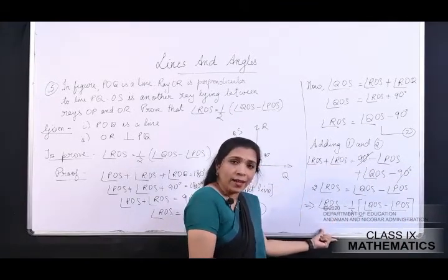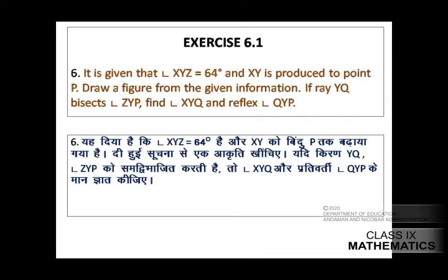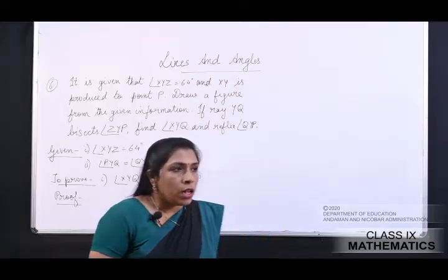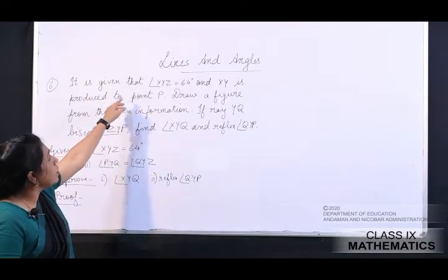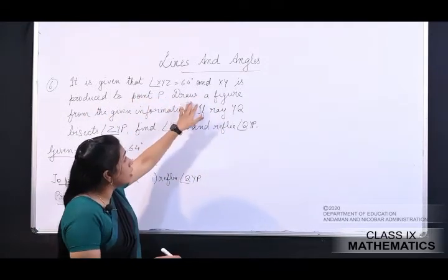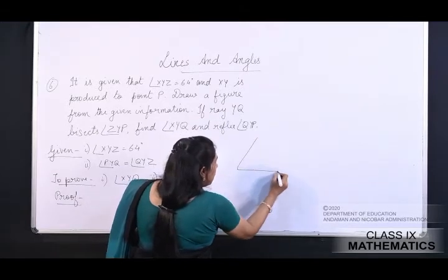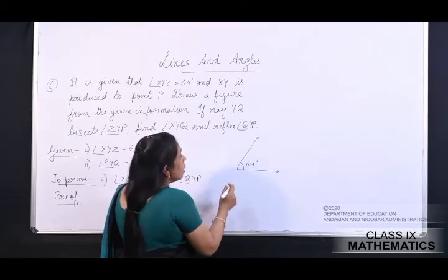Fine bachho, I hope that was easy. Chaliye ab haam next question ki or chalte hain. Question number 6: it is given that angle XYZ equals 64 degree and XY is produced to point P.